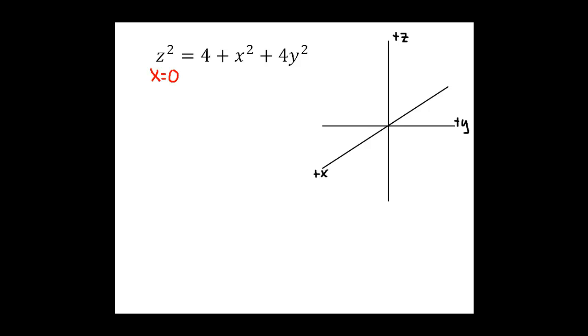I'm going to do the trace in the yz plane, so I'll plug in x equals 0. We'll have z squared equals 4 plus 4y squared. And then we want to go back to our knowledge of two-dimensional graphs. So think about what shape this graph is. This is going to be the graph of a hyperbola.